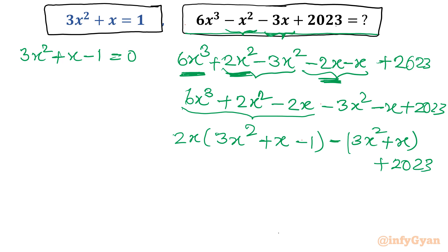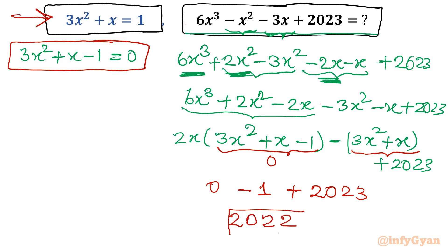Now I will write, you can see this equation is there. I will put this value equal to 0. So first term is 0. What about second term? Second term is again 1. So I will write 0 minus 1 plus 2023. So answer becomes 2022.